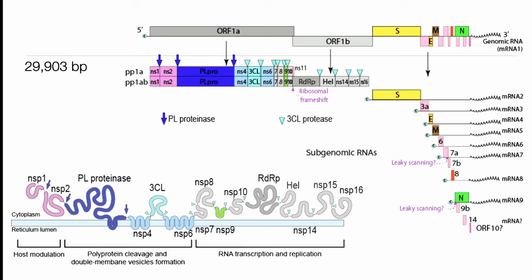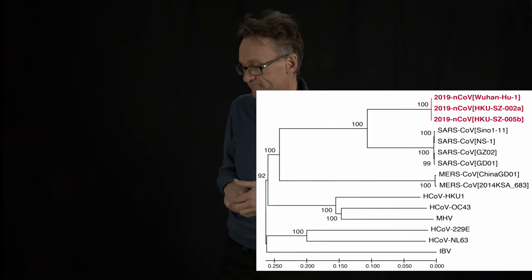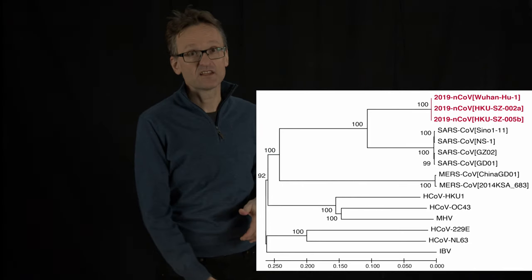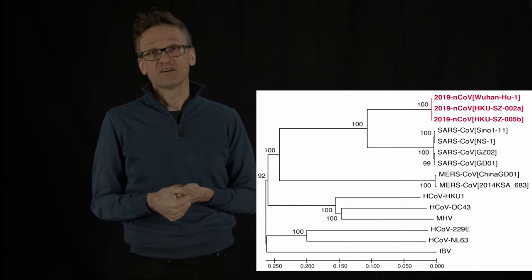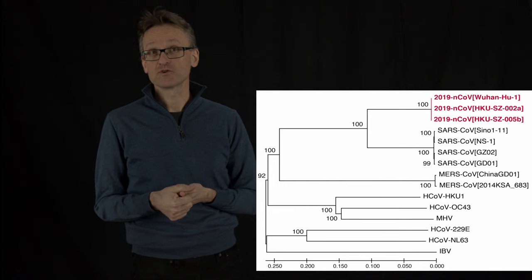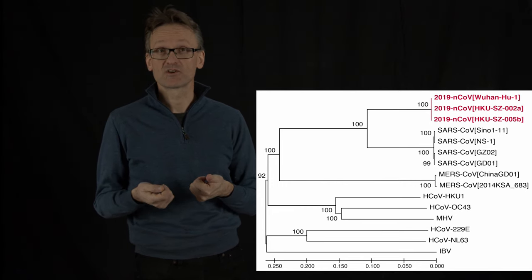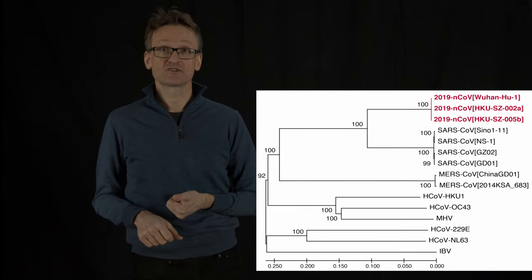In principle we could target all of them, but if we don't know anything we would need to start by targeting the ones that we believe are critical for the biological process. So which ones would that be? Well, the proteins that are responsible for cutting up all the other proteins, those two proteases. If we remove those two proteins, the virus is not going to work anymore. So they are definitely interesting targets.